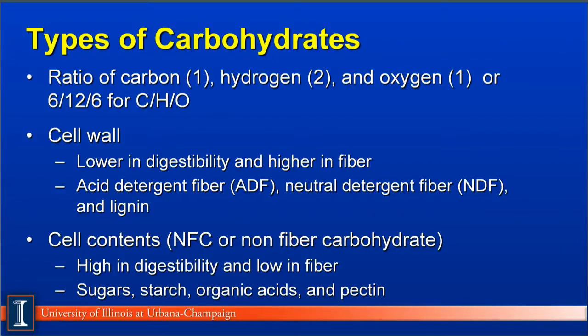When we look at carbohydrates, we can look at first how we define a carbohydrate. It is defined by the ratio of carbon to hydrogen to oxygen, in the ratio of 1 to 2 to 1. Many times in biochem class, you will also see it referred to as a ratio of 6 to 12 to 6, which is the normal ratio of carbon, hydrogen, and oxygen for glucose, one of the primary carbohydrates in the food chain.